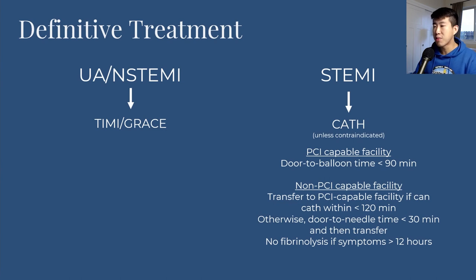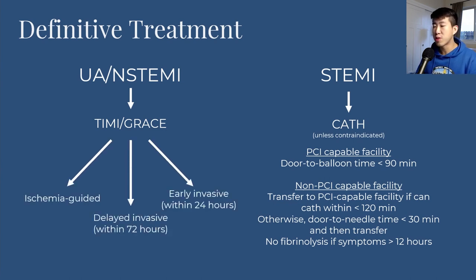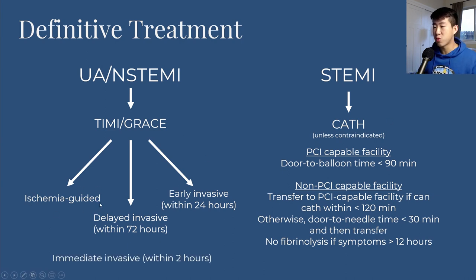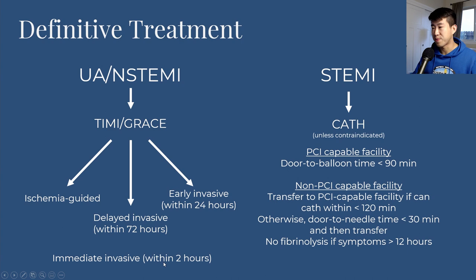Based on TIMI and GRACE scores, you choose between several strategies: an ischemia-guided strategy (non-invasive, no cardiac cath), delayed invasive within 72 hours, early invasive within 24 hours, or immediate invasive within two hours.